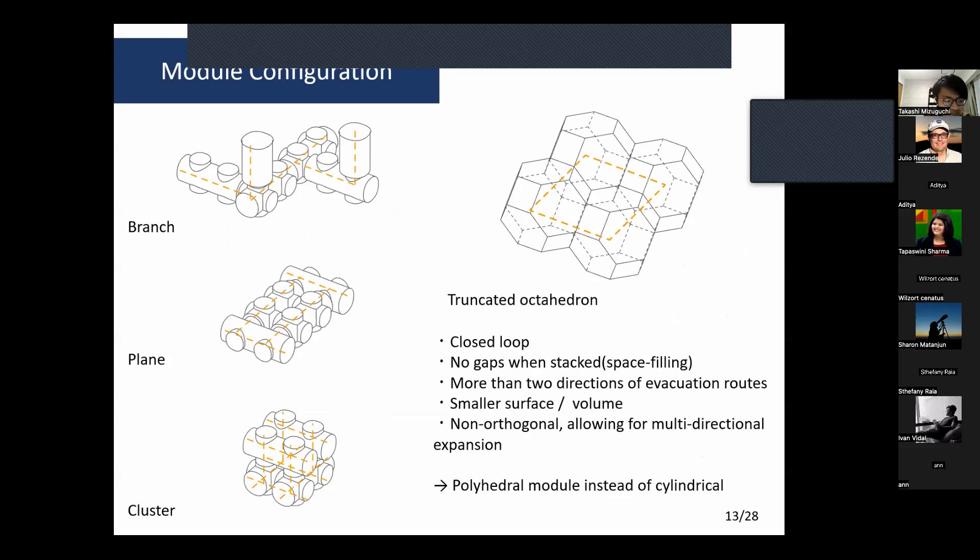So far I explained how cylindrical and spherical module shapes and their configuration, but I consider here the superiority of polyhedra. This is a truncated polyhedron. It has closed loops with no gaps when stacked, more than two directions of evacuation routes, and smaller surface per volume. Non-orthogonal configuration allows for multidirectional expansion, so polyhedral modules instead of cylindrical.